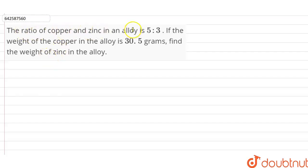Hi students, our question is: The ratio of copper and zinc in an alloy is 5:3. If the weight of copper in the alloy is 30.5 grams, find the weight of zinc in the alloy. Right, so in the question it is given that the ratio of copper to zinc is 5:3.